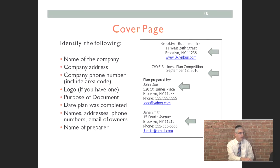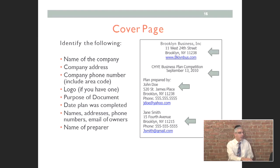The cover page is your chance to be a little bit creative — you can make it eye-popping to make a good impression on the reviewer. Basic information includes the company name on top, address, company phone number, logo if you have one, the purpose of the document — for example, the CHY business plan competition — the date the plan was completed, and the names, addresses, and phone numbers of the owners. This is just the cover page, but you can make it stand out from other plans.